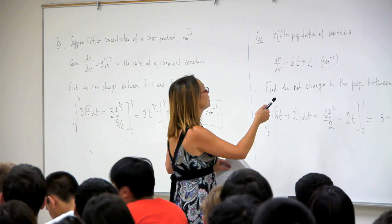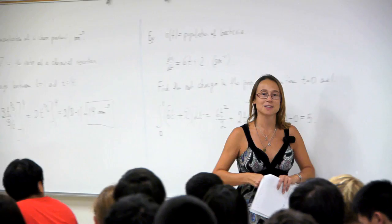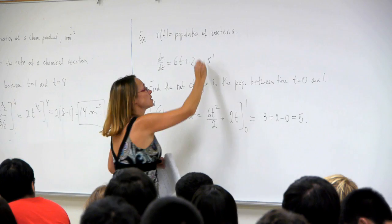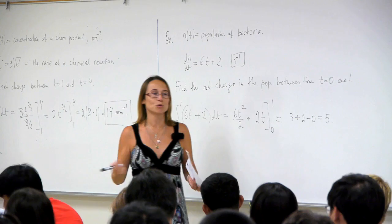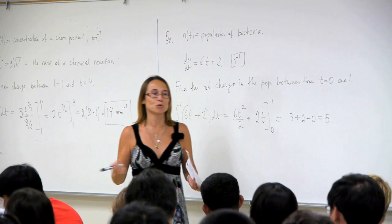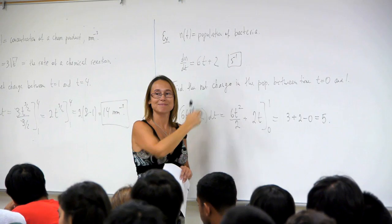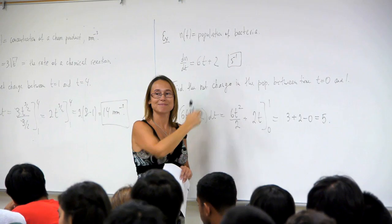Another question: what are the units? For the bacteria example, the units of population are just individuals (dimensionless counts). The rate of change N'(t) has units of seconds⁻¹, since population per unit time. So the units here are seconds⁻¹.